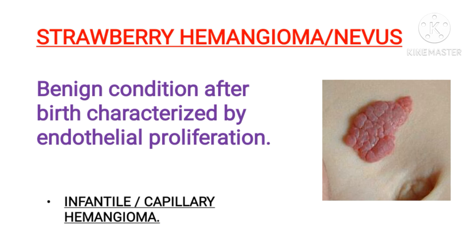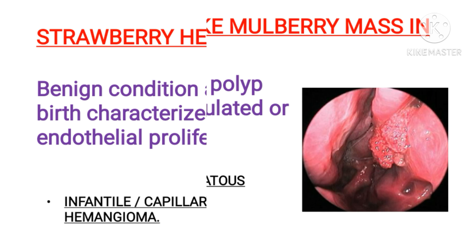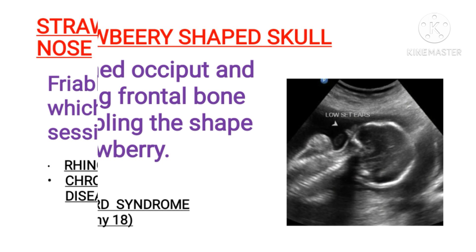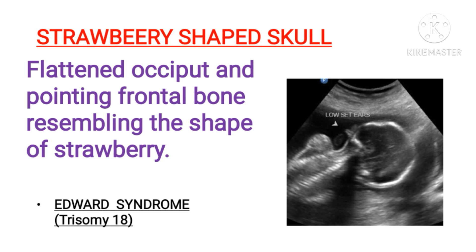Histologically, hemangiomas are composed of thin-walled capillaries with scant stroma. Next is the strawberry-like mulberry nasal mass, a benign tumor condition different from nasal mucosa. Here a friable vascular polyp develops, which is pedunculated or sessile and resembles a strawberry. It is most commonly seen in rhinosporidiosis and chronic granulomatous disease — the latter caused by a defect in bacterial killing, leading to recurrent bacterial infections.